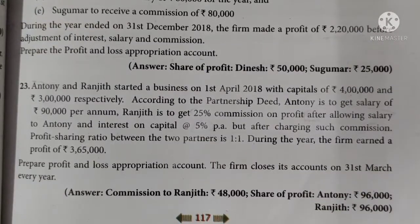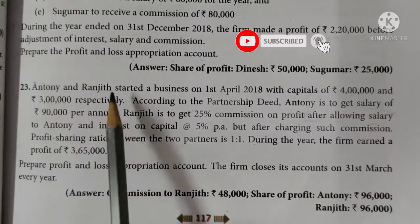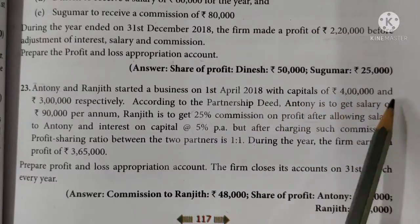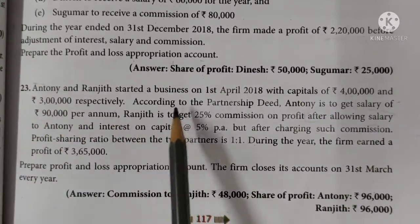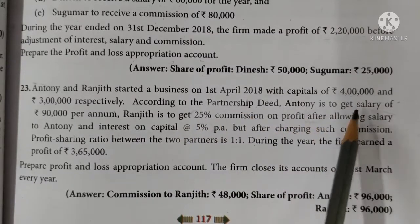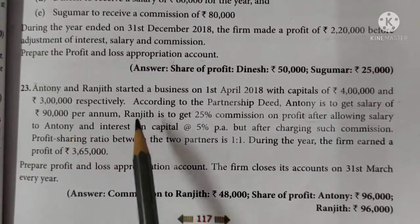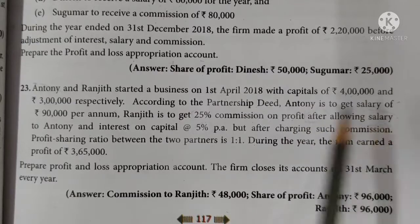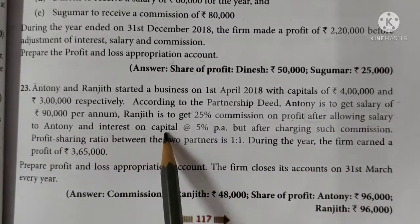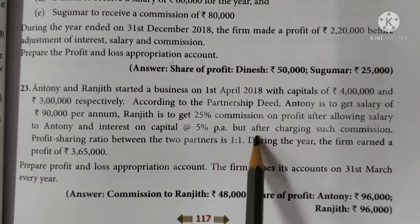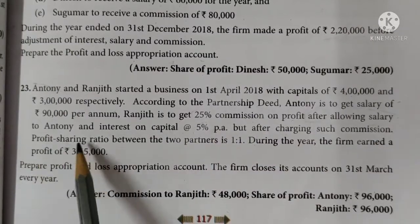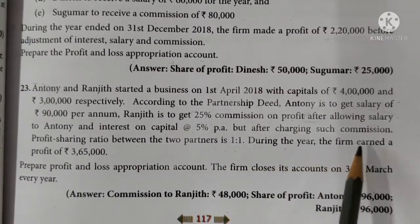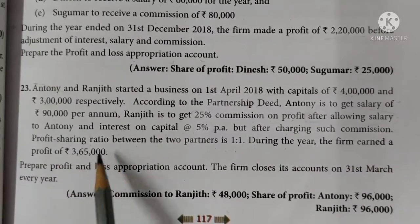12th Standard Accountancy, Chapter 3, Sum No. 23. Anthony and Ranjit started a business on 1st April 2018 with capital of Rs. 4 lakhs and Rs. 3 lakhs respectively. According to the partnership deed, Anthony is to get a salary of Rs. 90,000 per annum. Ranjit is to get 25% commission on profit after allowing salary to Anthony and interest on capital at 5% per annum, but after charging such commission. The profit sharing ratio between the two partners is 1:1. During the year, the firm earned a profit of Rs. 3,65,000.